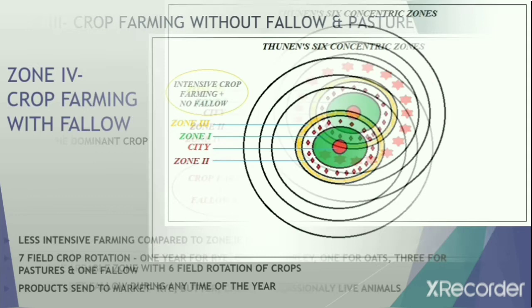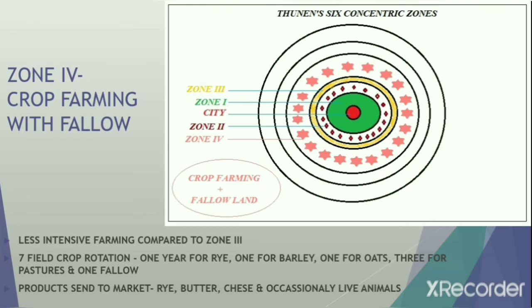Zone 4 is the crop farming area with some fallow land. Here, less intensive farming is done compared to Zone 3. A seven-field crop rotation system is followed: one year for rye, one for barley, one for oats, three for pasture lands, and one kept as fallow land. Products sent to market include rye, butter, cheese, and occasionally some live animals.